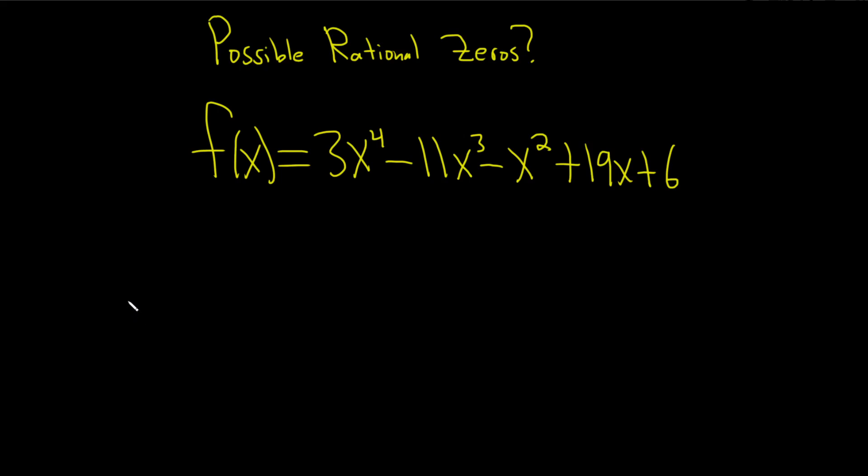Find the possible rational zeros. We're going to use something called the rational zero theorem, which says that the possible rational zeros are going to be of the form factors of the last number over factors of the first number.